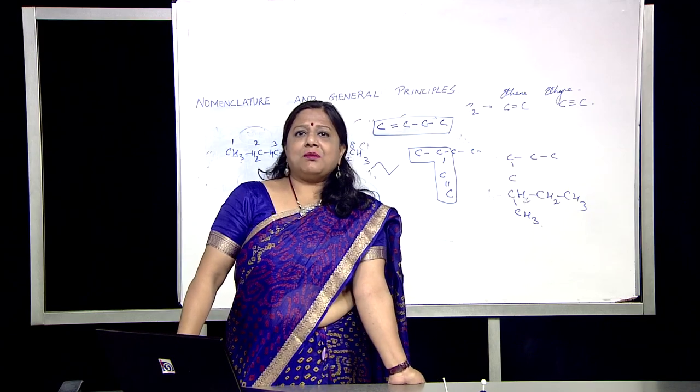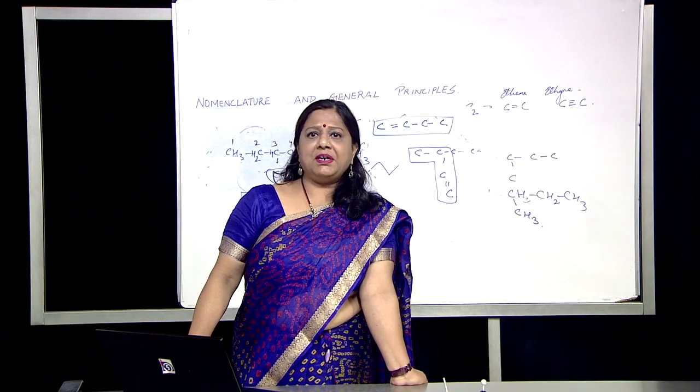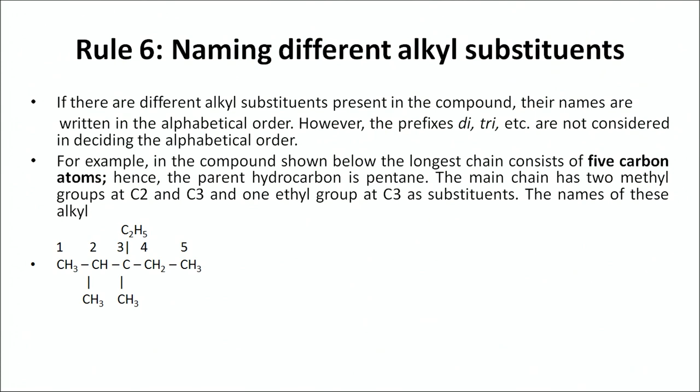Rule number five covers naming the same alkyl groups at different positions. If there are two or more identical groups, use the prefixes di-, tri-, or tetra- depending on how many are present. For example, if there are two methyl groups at positions 2 and 3, the compound is named 2,3-dimethylpentane. Rule number six covers different alkyl substituents: name them in alphabetical order. If a compound has a parent chain of 5 carbons, with two methyl groups at positions 2 and 3, and one ethyl group at position 3, the name is 3-ethyl-2,3-dimethylpentane.